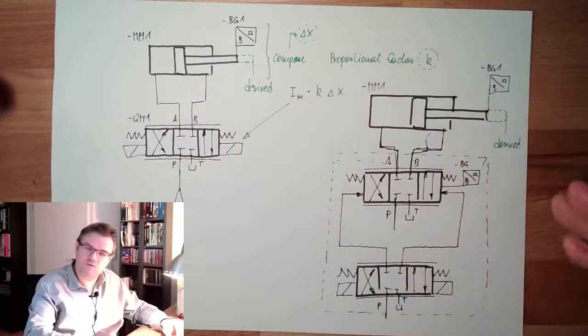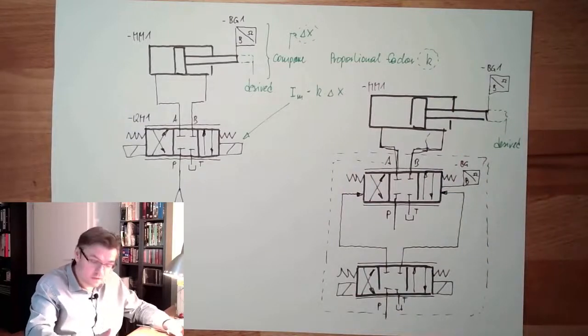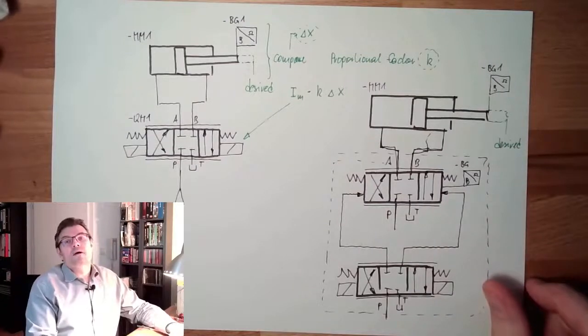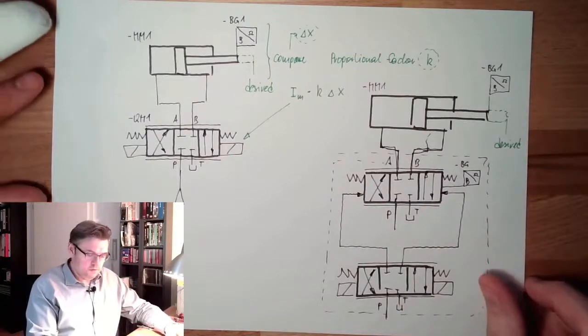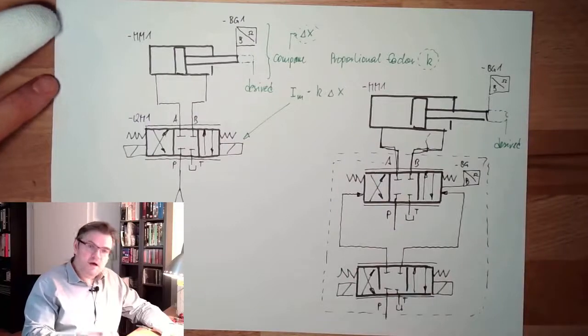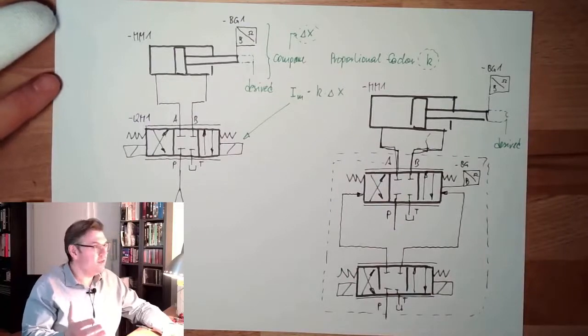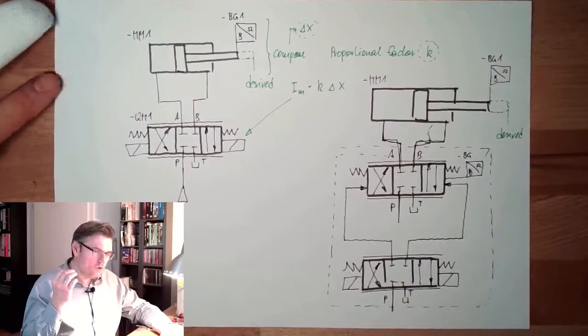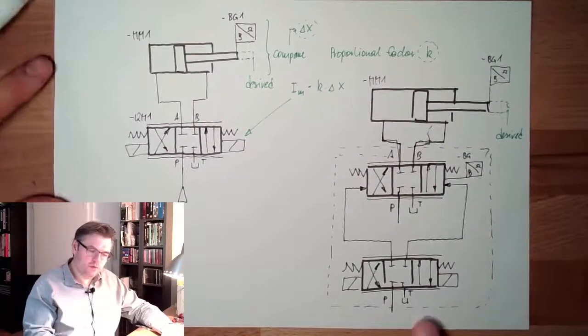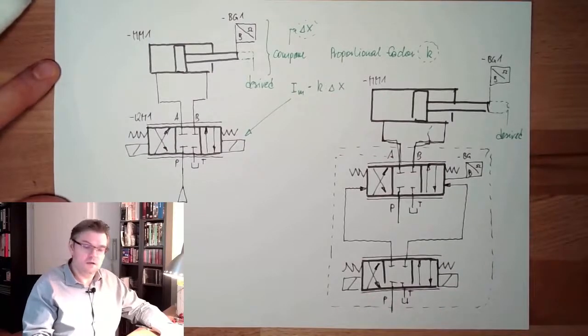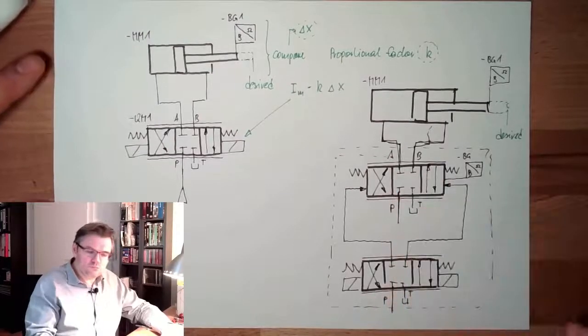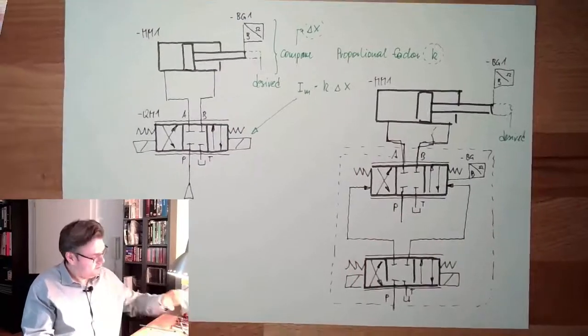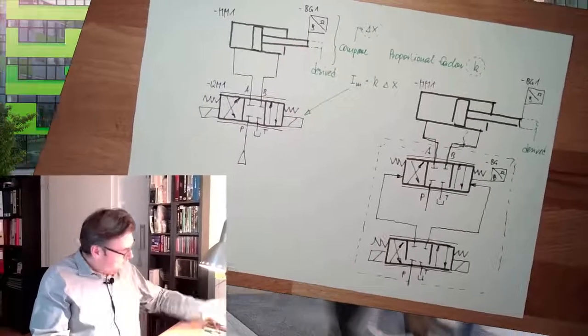We need a lot of oil, so we need a big control valve. And the control valves usually, you know, big control valves are usually not controlled directly by current because I would need a lot of current, simply. And so I'm selecting pre-control, two-stage hydraulics. Now this is also explained. I hope this is clearer now.